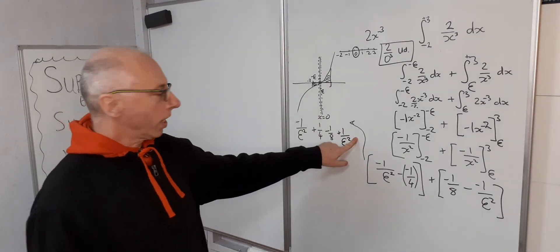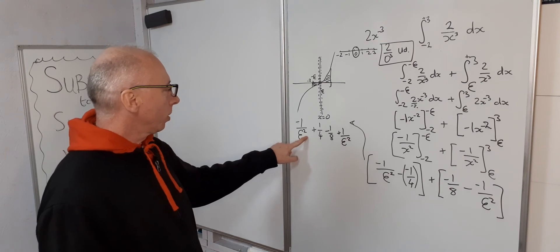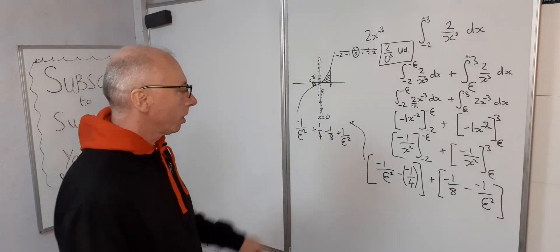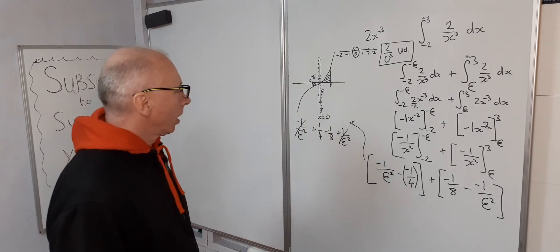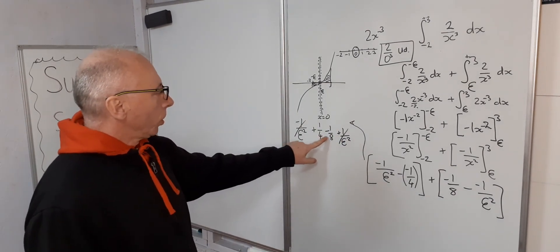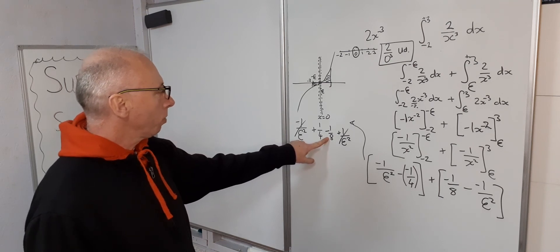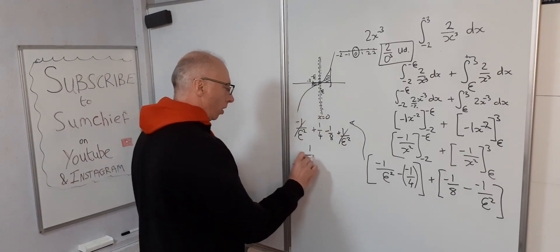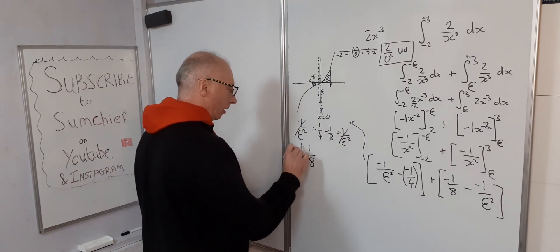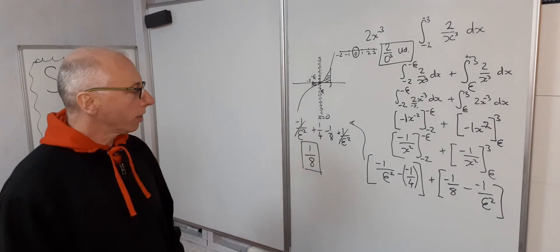Okay, minus minus 1 over epsilon squared gives us plus 1 over epsilon squared. I'm not going to put the plus in just yet. Minus 1 over epsilon squared plus 1 over epsilon squared—these cancel out. And then plus a quarter minus 1 over 8. So plus a quarter minus 1 over 8, that gives us plus 2 eighths minus 1 eighth, so it gives us 1 over 8. Okay, there we go, that's what I'm saying.